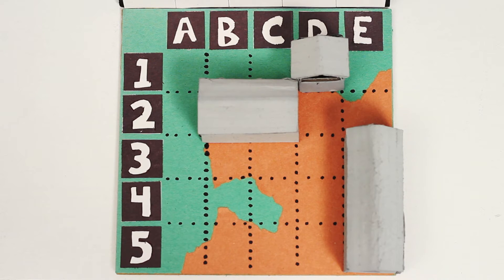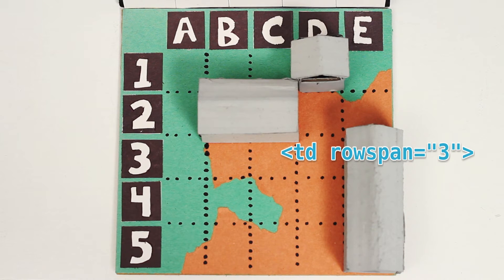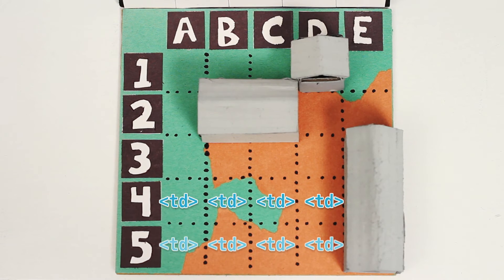Likewise, we can make a cell span multiple rows with the rowspan attribute. My station spans cells E3 to E5, so the td tag in E3 needs the attribute rowspan equals 3. That means we need to take out one td tag from both rows 4 and 5 to accommodate the colspan.